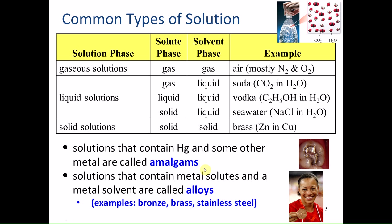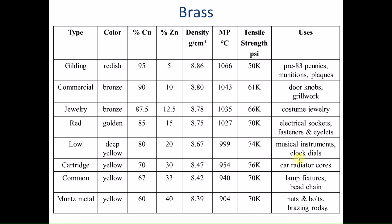A special type of alloy is an amalgam, which is just a mercury solution. Amalgam fillings — sometimes called silver fillings — are actually mercury combined with other metals that solidify into the crevices of teeth to fill cavities. They're not used as much anymore, both for cosmetic reasons and because people are concerned about mercury exposure.